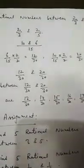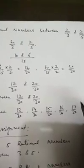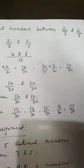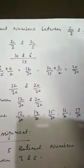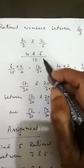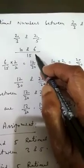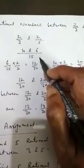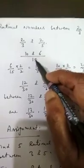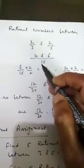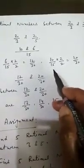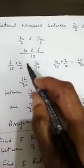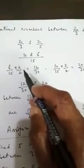One more example: find rational numbers between 2 by 3 and 2 by 5. Again, the denominators are not the same. The LCM of 3 and 5 is 15, so they are changed to 6 by 15 and 10 by 15. Note that it is not compulsory to multiply by 10 — we can take any suitable multiple, as long as it is the same for both numerator and denominator.